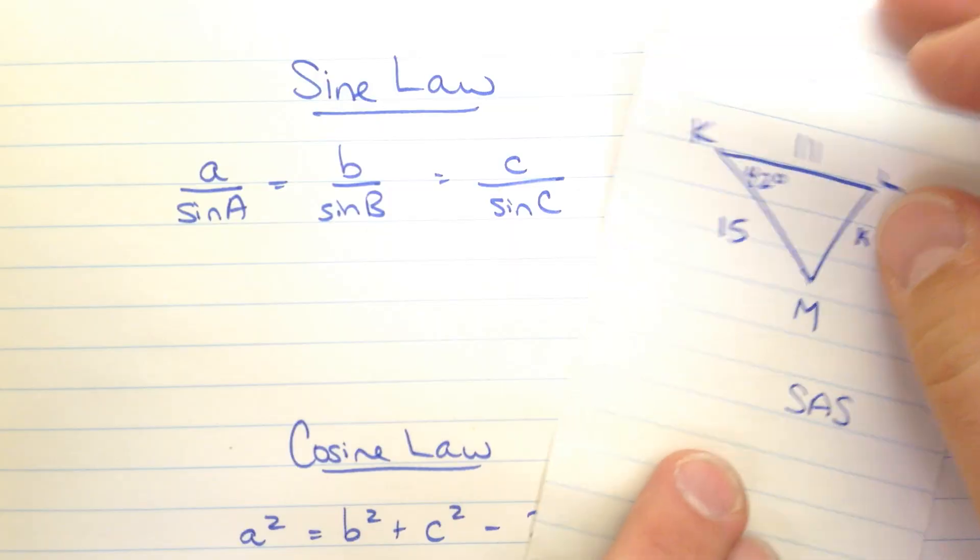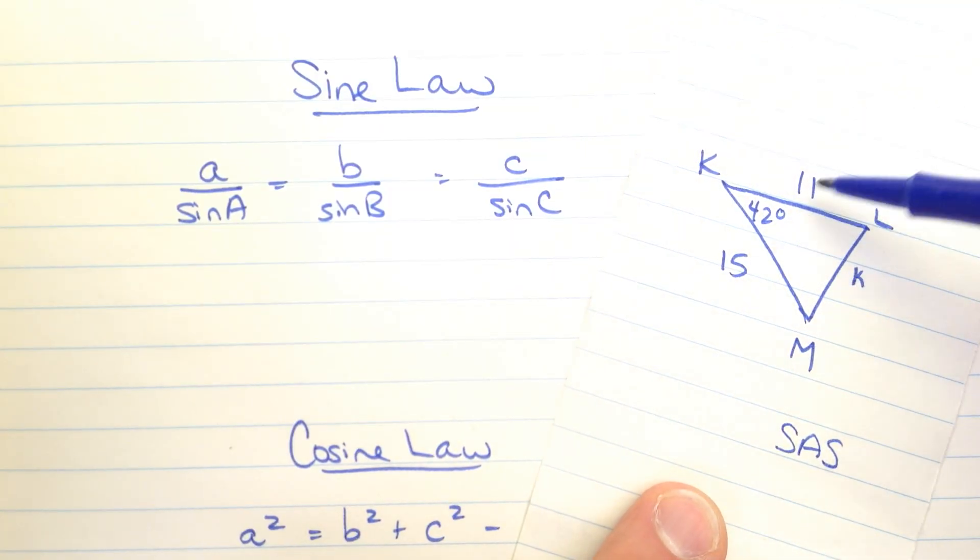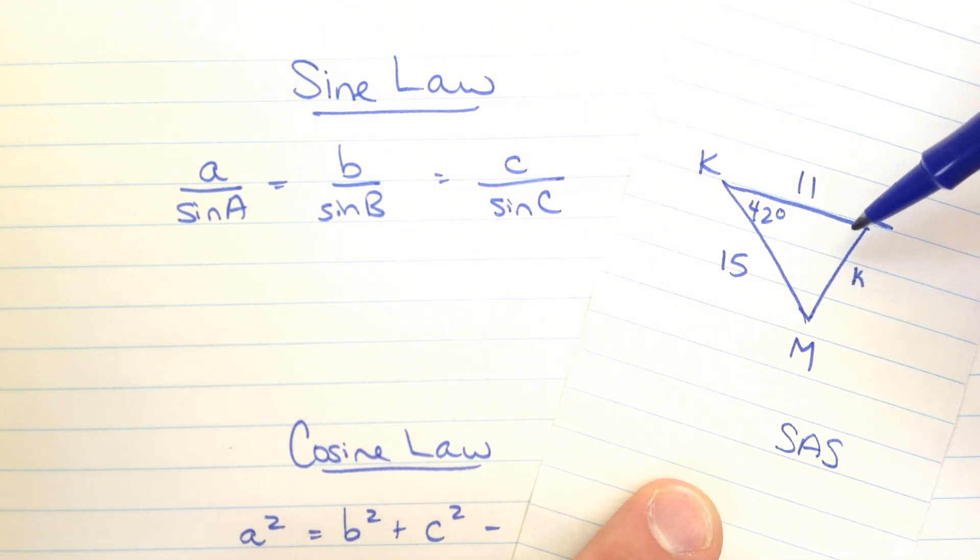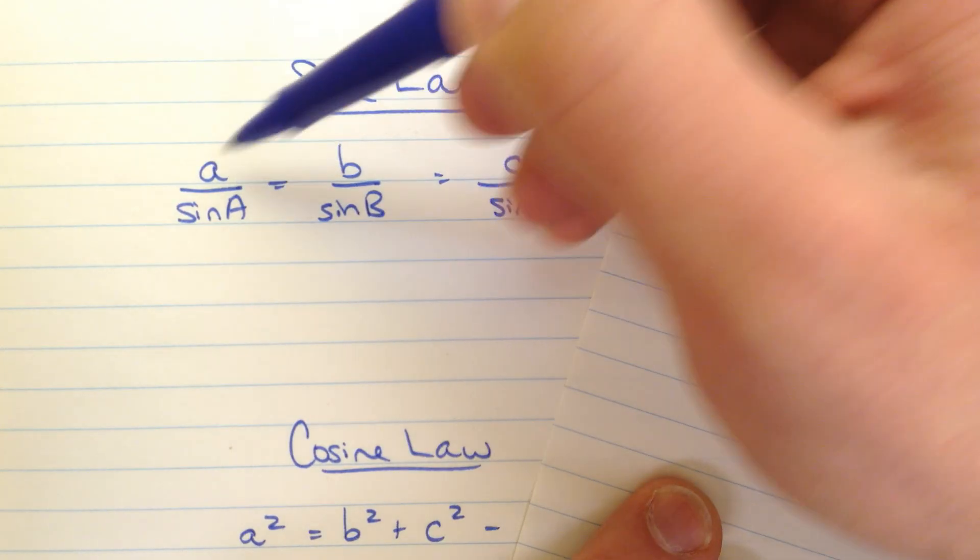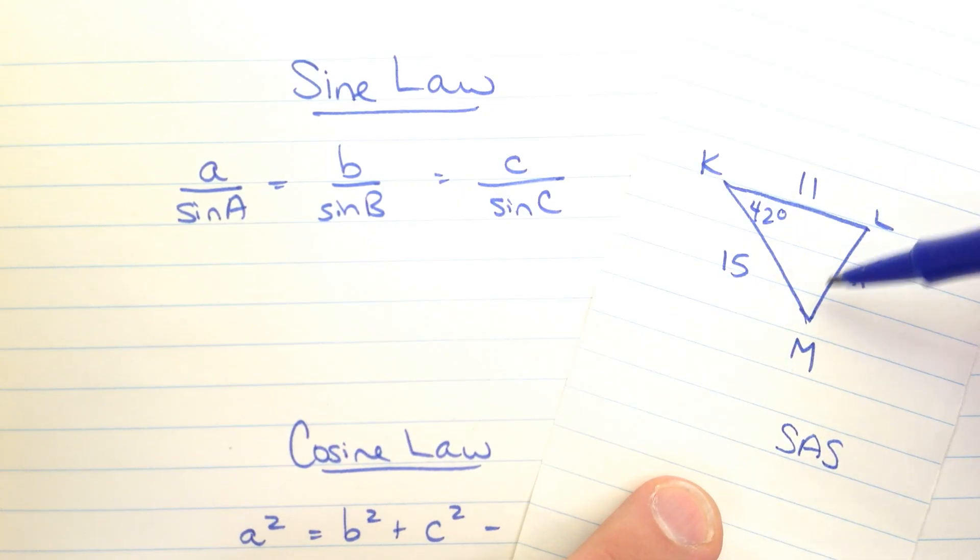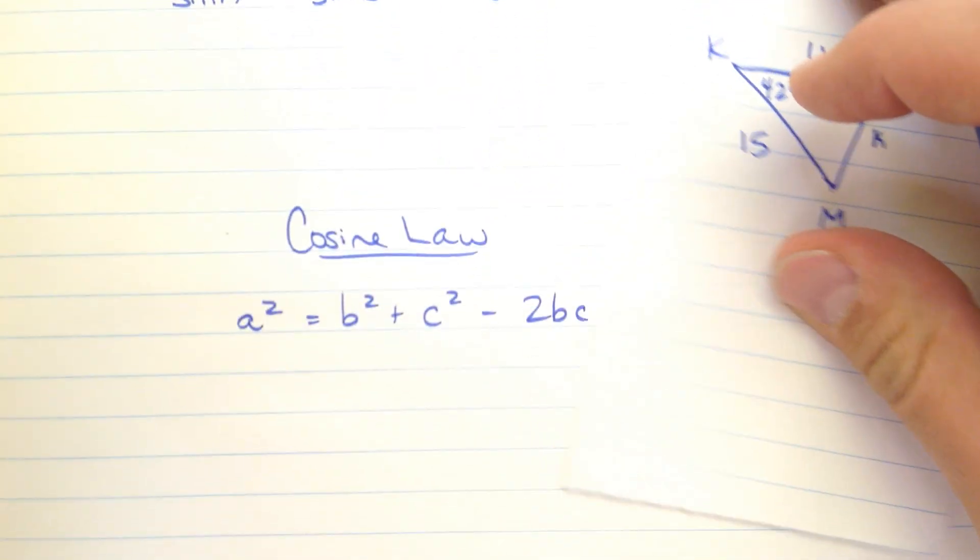Then I would need to have either angle m or angle l to be able to finish off to the three or four pieces of information that I need. That's no good here. I can't do that. I don't know enough about either of these angles. I don't know what those are. So we go to cosine law.